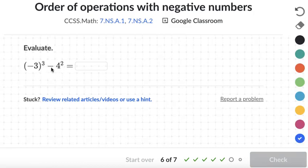We have exponents and subtraction. So let's go ahead and do those exponents first. So negative 3 to the third power would be negative 3 times negative 3, which is positive 9 times another negative 3, which is negative 27. And then 4 squared is 16. So we have negative 27 minus 16.